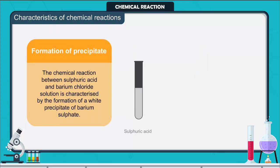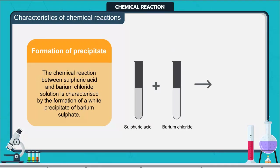Formation of precipitate: The chemical reaction between sulfuric acid and barium chloride solution is characterized by the formation of a white precipitate of barium sulfate. As we observe the changes around us, we can see that there is a large variety of chemical reactions taking place around us.